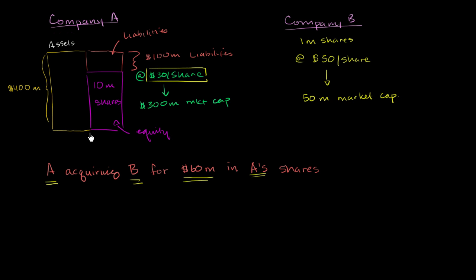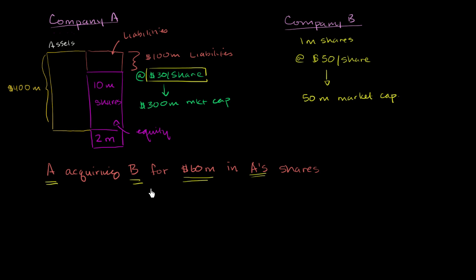So Company A is going to create another 2 million shares. If they wanted to do it as a cash transaction, they could take these shares and sell them into the market, do a secondary offering, and then hopefully raise $60 million in cash, and then use that cash to buy Company B. But this is a share offering — they're not going to do it with cash.